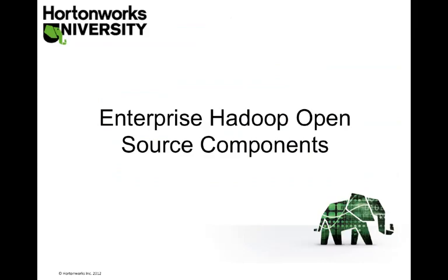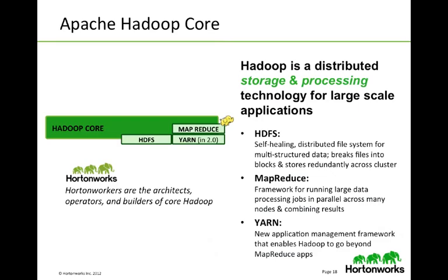There are a number of open source components that make enterprise Hadoop viable. Hadoop itself is a distributed storage and processing technology for large-scale applications. HDFS, the Hadoop Distributed File System, is a self-healing distributed file system for multi-structured data — it breaks files into blocks and redundantly stores them across the cluster. MapReduce is a framework for running large data processing jobs in parallel across many nodes, combining results by mapping, reducing, and sorting them. We'll cover HDFS and MapReduce more in-depth in a later module.